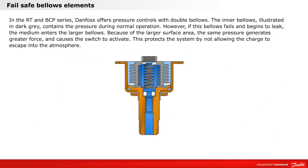In the RT and BCP series, Danfoss offers pressure controls with double bellows. The inner bellows, illustrated in dark gray, contains the pressure during normal operation. However, if this bellows fails and begins to leak, the medium enters the larger bellows. Because of the larger surface area, the same pressure generates greater force and causes the switch to activate, protecting the system by not allowing the charge to escape into the atmosphere.